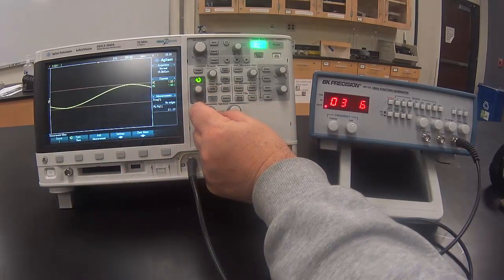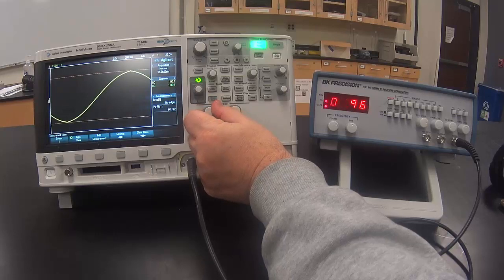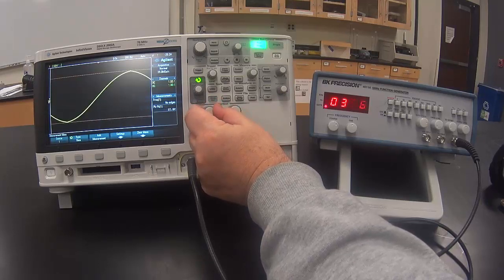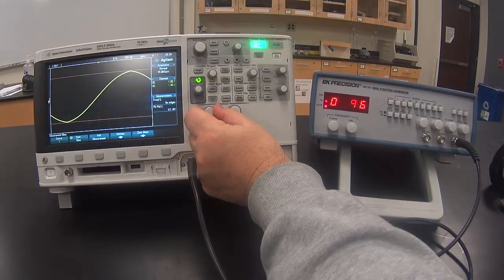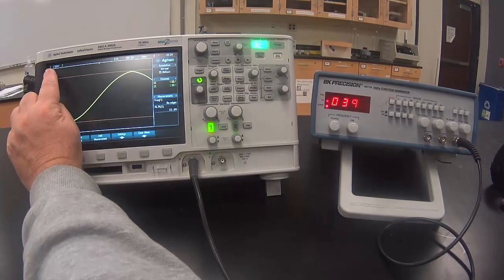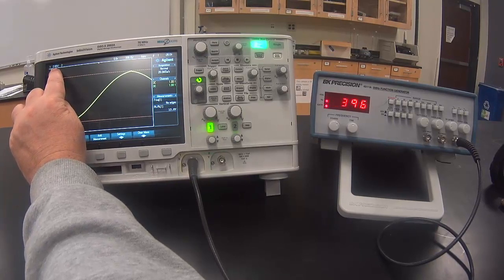As I change the volts per division, the signal takes up different amounts of space on the screen. I can get the reading for the setting for volts per division up here on the screen.